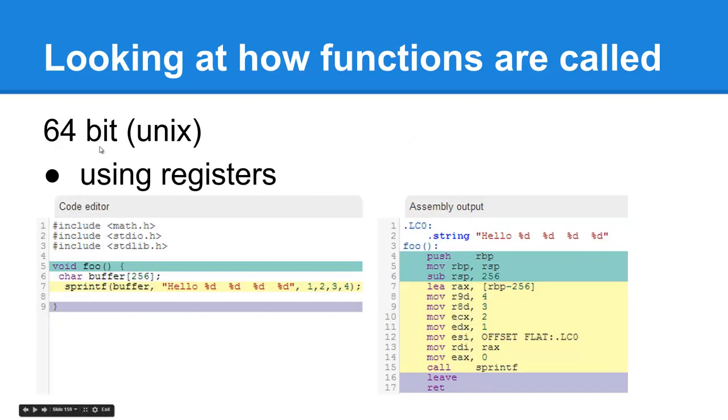With 64-bit Linux, the registers are instead used. It starts with R9D, R8D, ECX, EDX, and obviously the compiler jumped from the 64-bit to 32-bit registers for some reason here. Then it loads in a destination pointer for this local stack buffer and then calls sprintf.